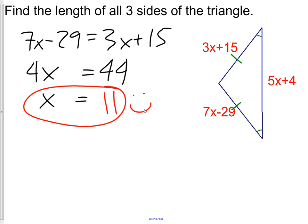Now let's substitute that in. 3 times 11 is 33. 33 plus 15 will give me 48.